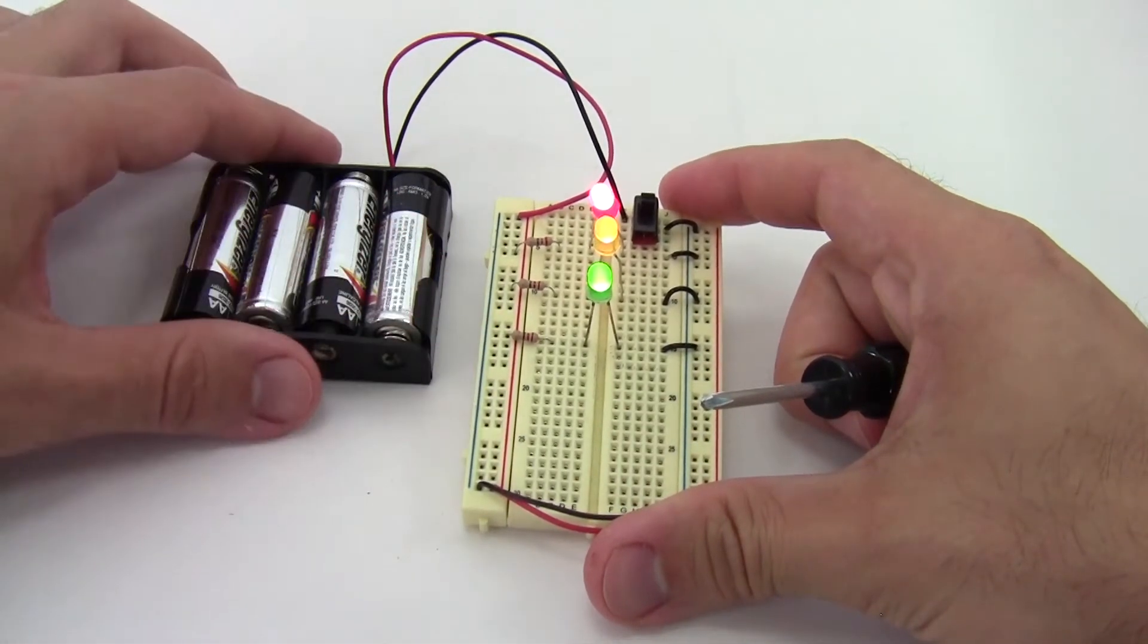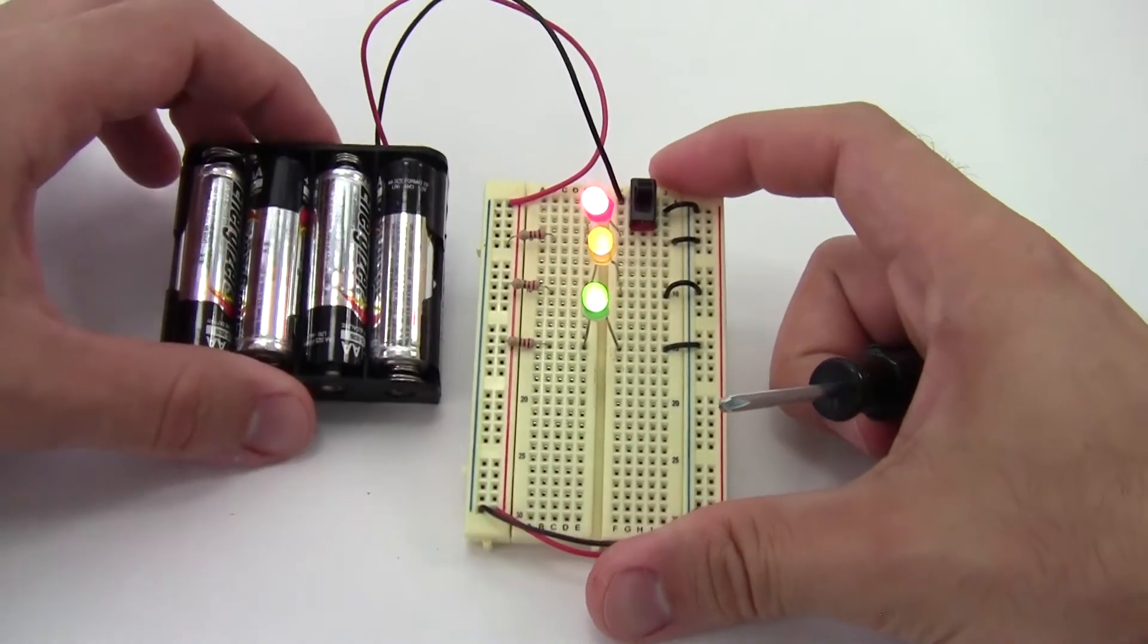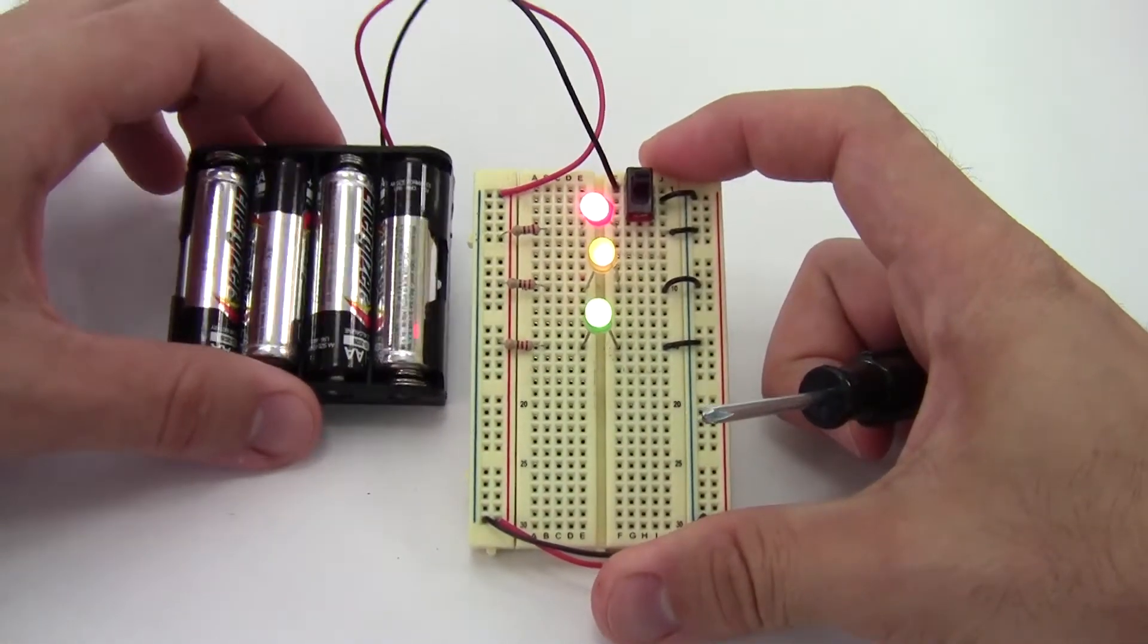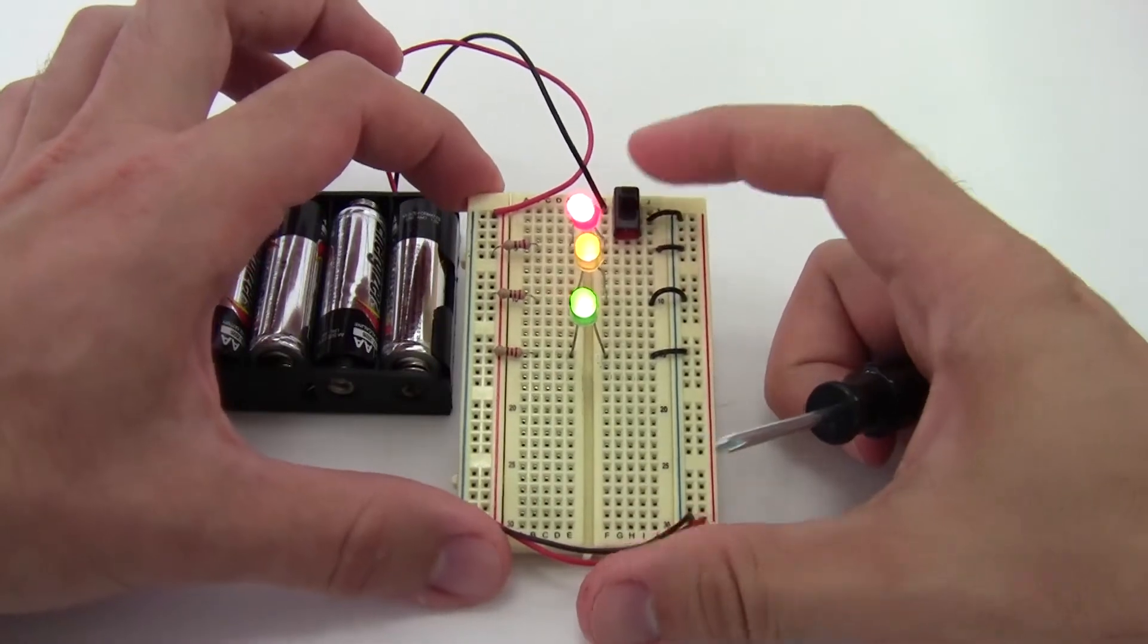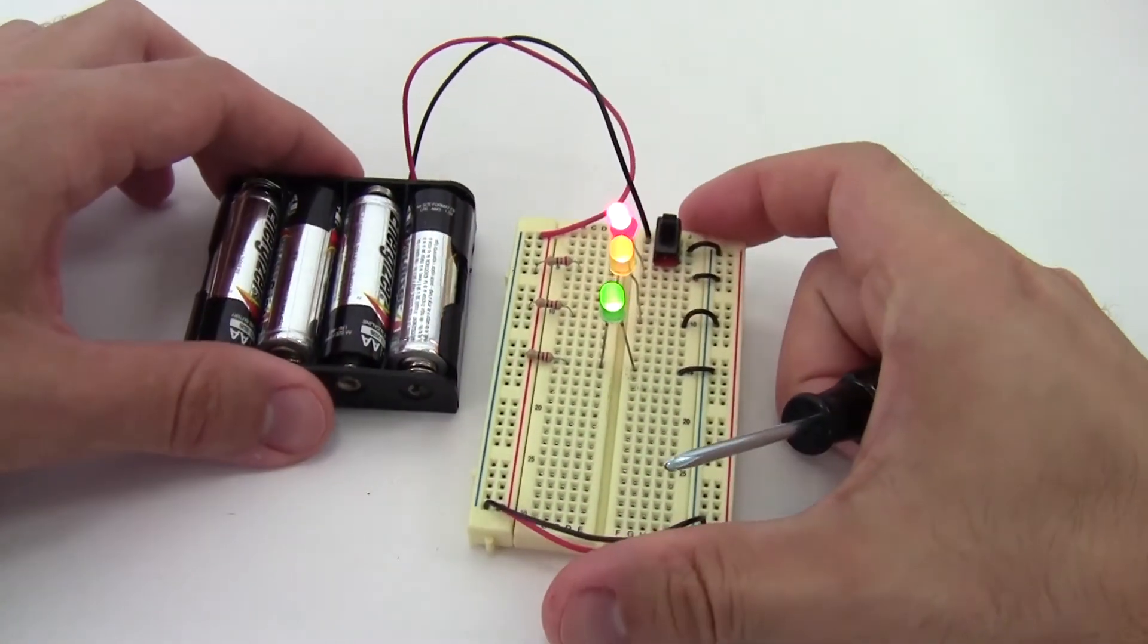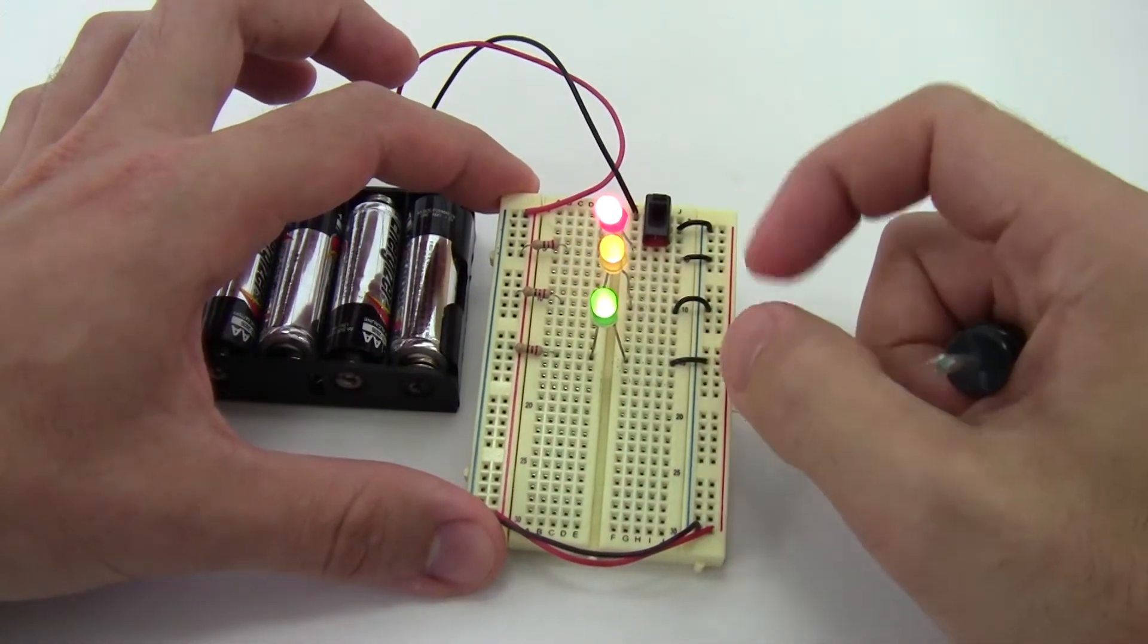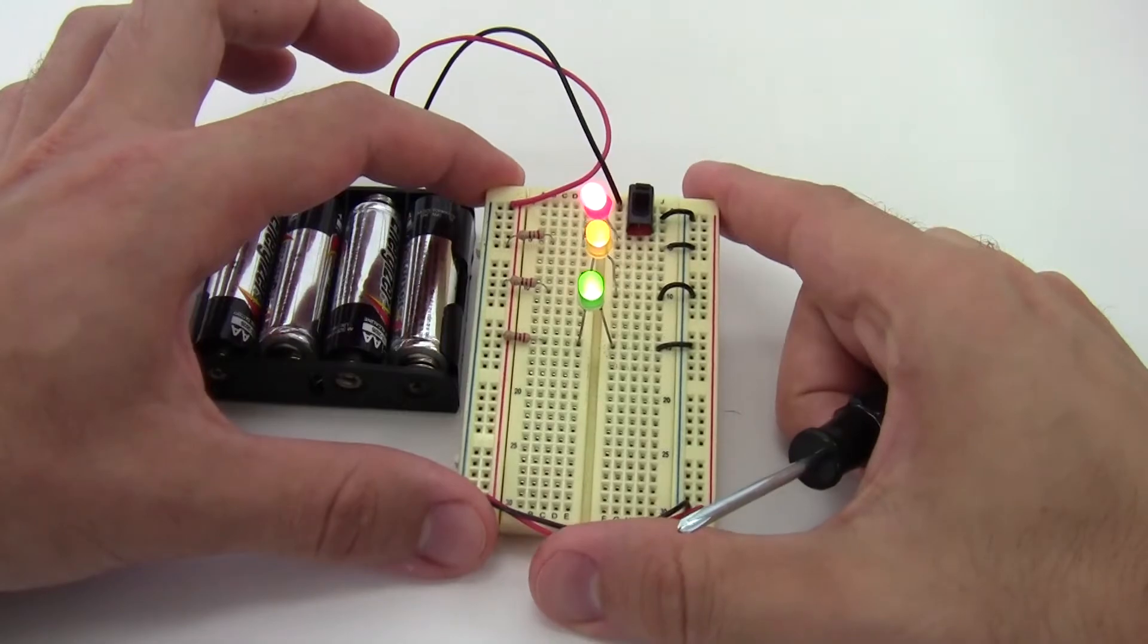If you're not sure how to use a breadboard or how to choose resistor sizes for LEDs, I have separate tutorial videos about that linked in the description. The basic idea here is that we have this circuit, in this case with a tiny switch and built on a breadboard. All you're going to do to build the box is take this same circuit and use a much larger regular light switch and then mount it inside of a box instead of building it on the breadboard.